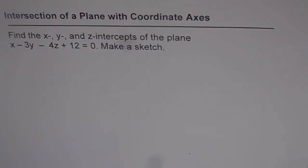Intersection of a plane with coordinate axis. Find the x, y, and z intercepts of the plane x minus 3y minus 4z plus 12 equals 0. Make a sketch.